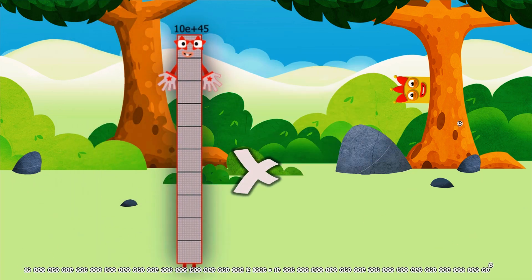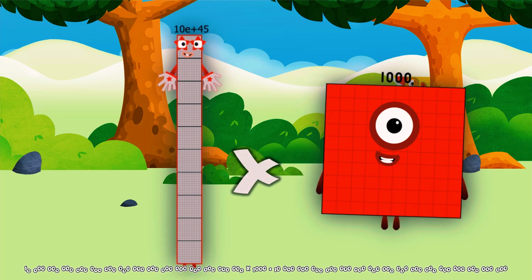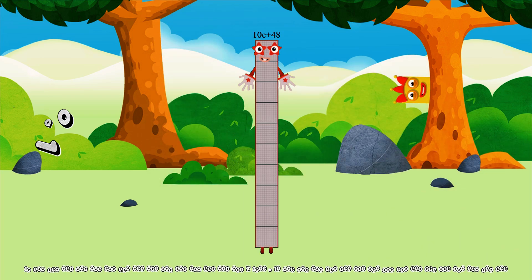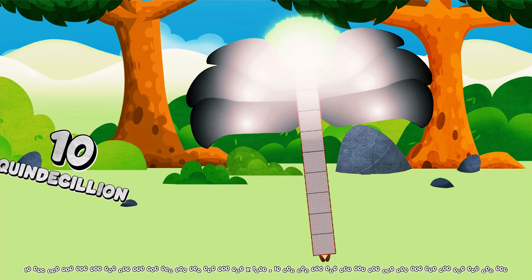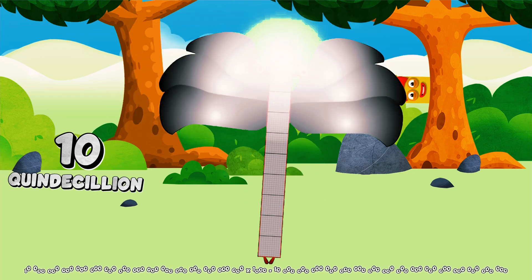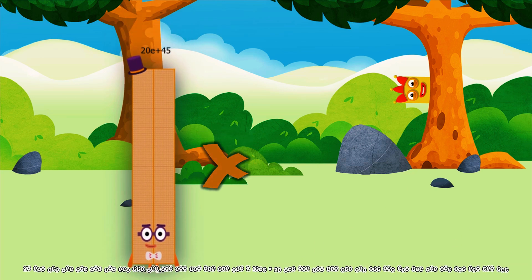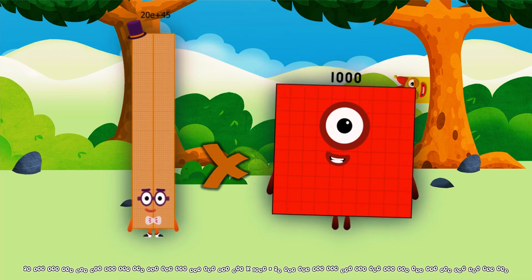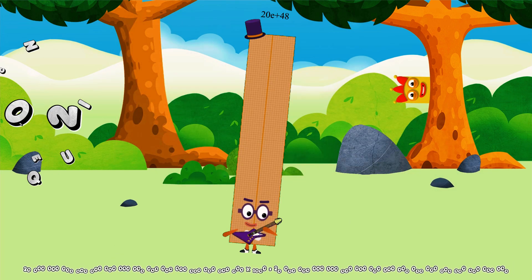10 quadward decillion multiplied by 1,000 equals 10 quintillion.